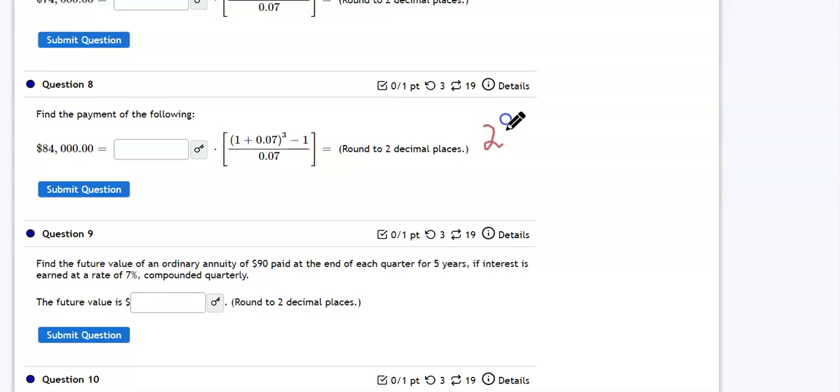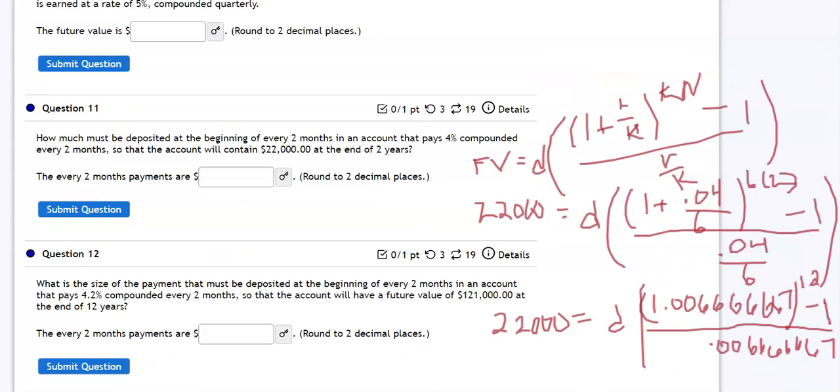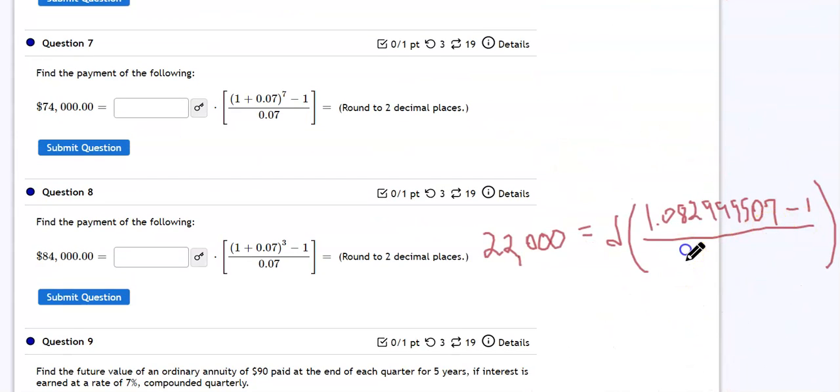So when I raise that to the 12th power, I'm going to have that our 22,000 is equal to D times 1.08299995, 0.007 minus 1. Let me get that denominator again. So 0.006666666666666667.